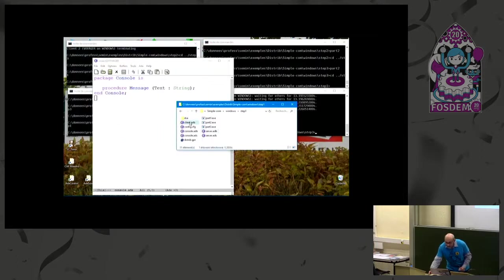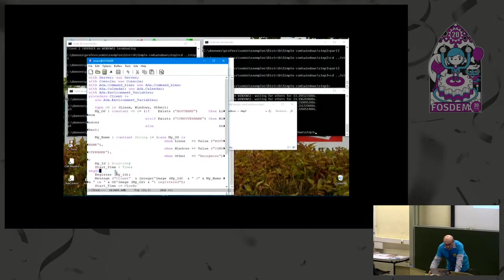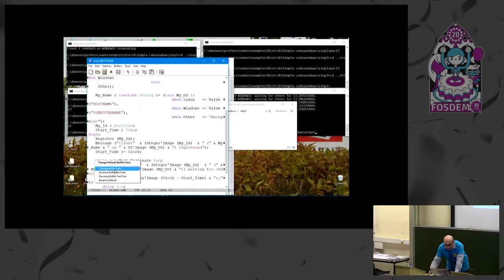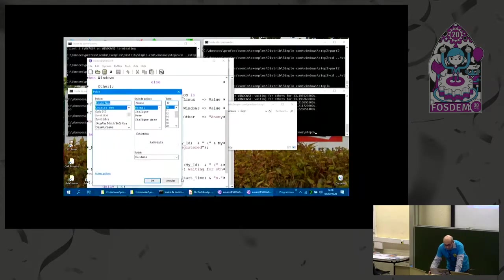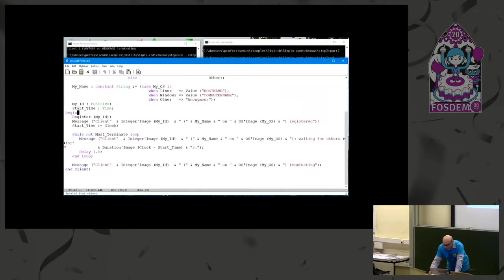And then, the client, very simple also. The client just registers. It prints a message by printing message. Well, it gives us the time. And, while not must_terminate, while not everybody's there, it loops saying it waits for a certain number of seconds, delays one second. And, when must_terminate becomes true, just prints that it's terminated.